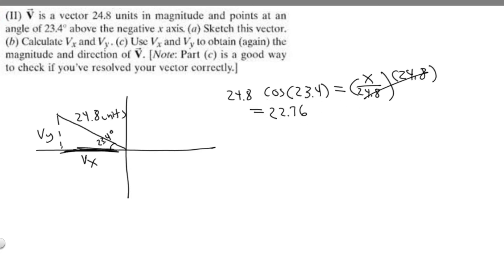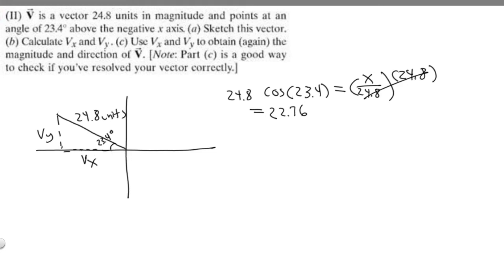This value is the horizontal length. We label it as negative because we're traveling in the negative direction. If you're going upwards, label it positive; downwards, negative. If you're going right, positive; going left, negative. So we're going to label V sub x as negative 22.76 units.